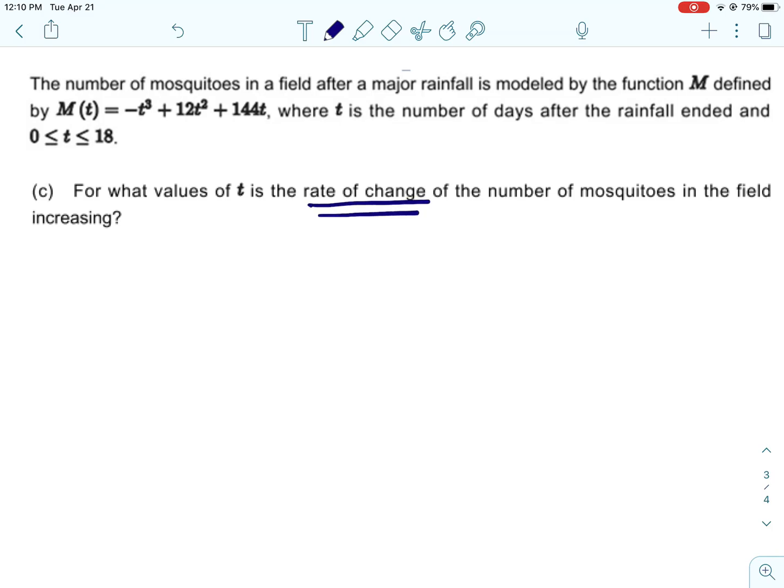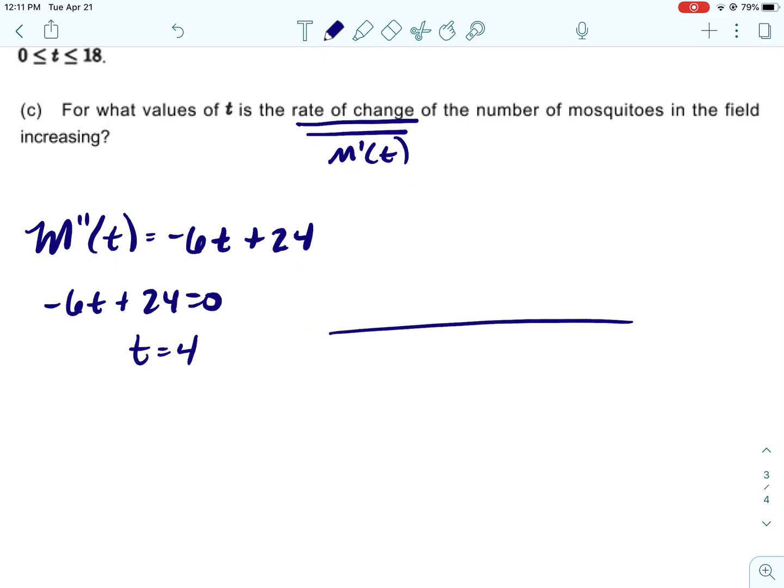Okay, so for part C, we want to find the values of t when the rate of change of the number of mosquitoes is increasing. So if we want to find when the rate of change is increasing, we're going to find when M'(t) is increasing, and that would mean we would want to find the derivative of it and where that derivative is positive. So let's go ahead and find the second derivative of M, which is the derivative of the derivative. You just use the power rule to find that, and we're going to find when that is equal to 0, and that's going to be on the fourth day.